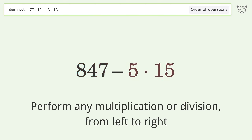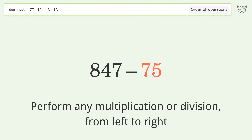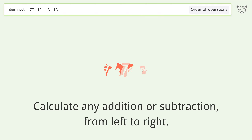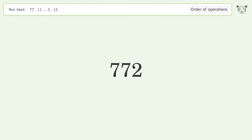Next, 5 times 15 equals 75. Then calculate any addition or subtraction from left to right: 847 minus 75 equals 772. And so the final result is 772.